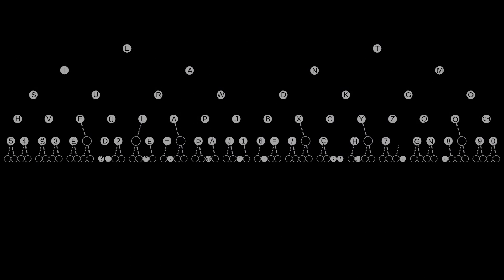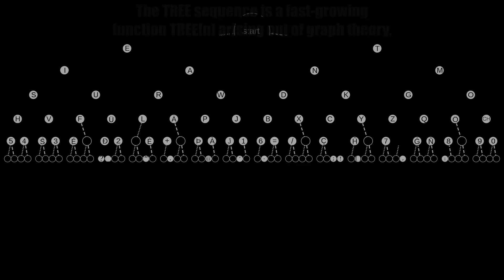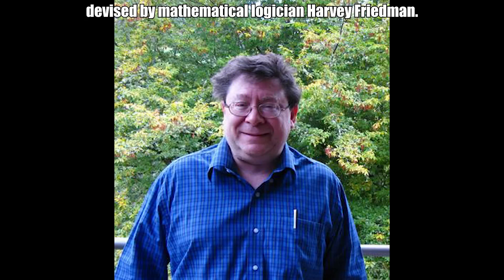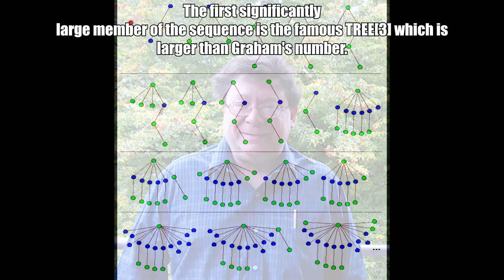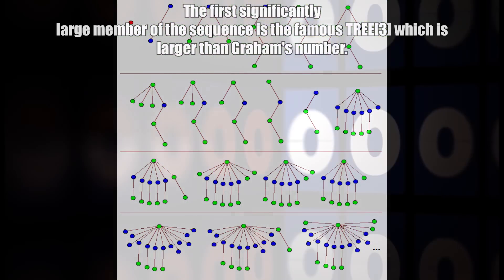Next up, the TREE(3) number. The TREE sequence is a fast-growing function arising from graph theory, devised by mathematical logician Harvey Friedman. The first significantly large member of the sequence is the famous TREE(3), which is larger than Graham's number.